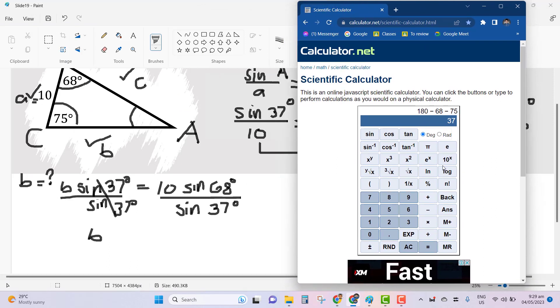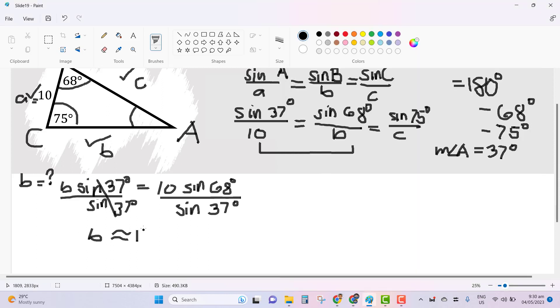Using the calculator, we could solve it by first making sure that we separate the numerator and denominator properly so that we will not have any error in our computation. So let's use parentheses. 10 sine 68, close, divided by sine 37 degrees. The result is 15.4064, and so forth. Let's round it off into two decimal places, so we will be approximating it to 15.41. And since it's a side measurement, we will be using units. There's no given unit of measurement, so we will just be using units. So that's for your side B.